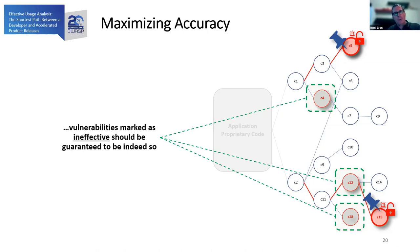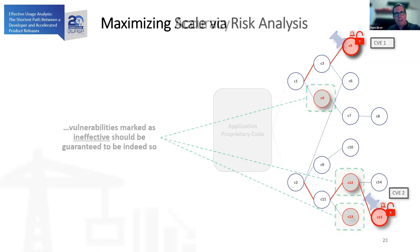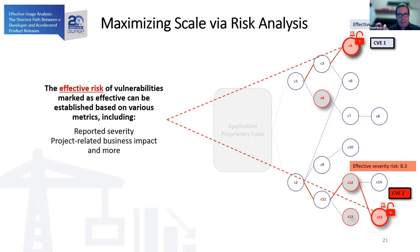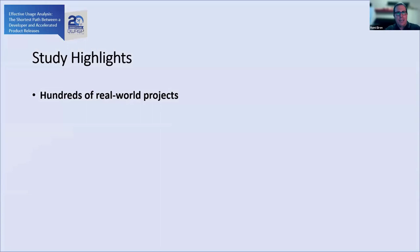Elements retained following this step are those associated with the third part of effective usage analysis: risk analysis. Here you can take whatever elements would be considered — business impact, reported severity, whatever options you have in mind — and apply them to the retained elements to determine what is truly and utterly the effective severity. This is really what the whole idea is about.